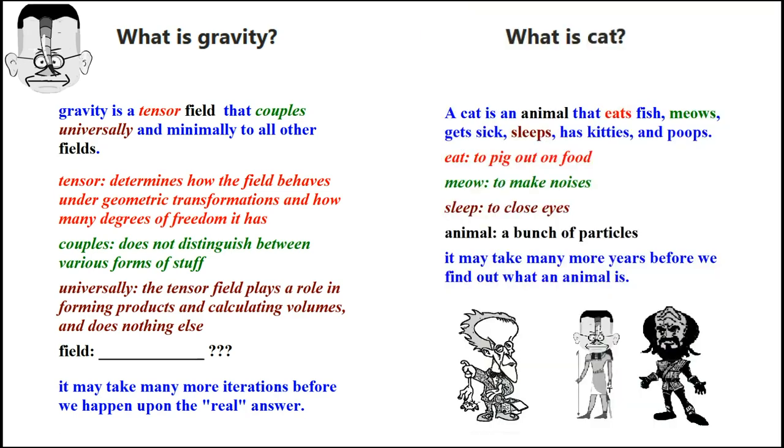He ends up his article saying, it may take many more iterations before we happen upon the real answer. So he doesn't know what gravity is. After all that, he can't tell them what gravity is. He says, you gotta wait 400 more years. We waited since Galileo and Newton, 17th century scientific revolution. Now we gotta wait another 400 years. Maybe we'll find out what gravity is someday.